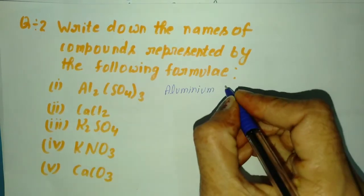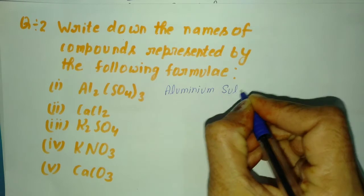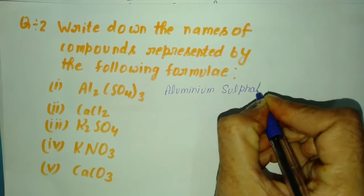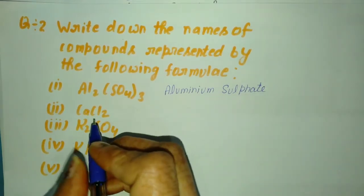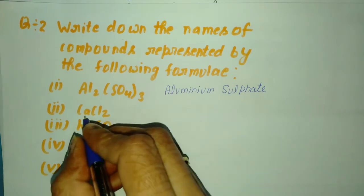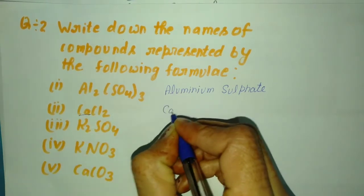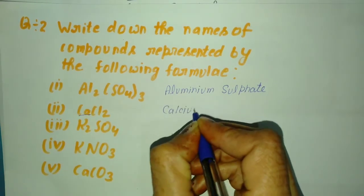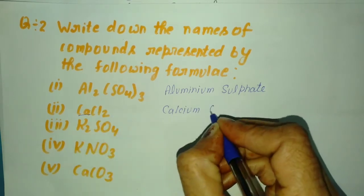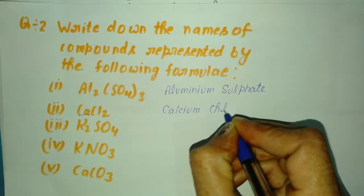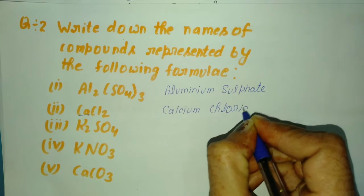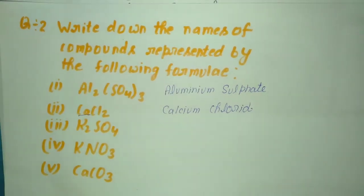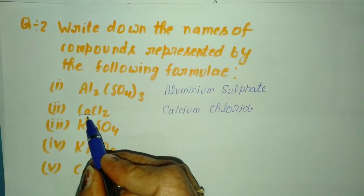Next, CaCl2. Ca means calcium and Cl2 means chloride. This is calcium chloride.